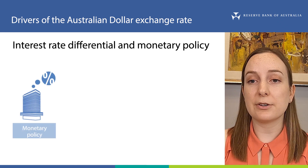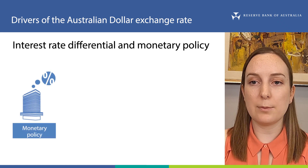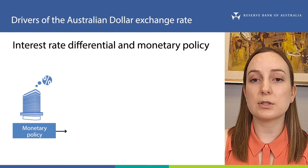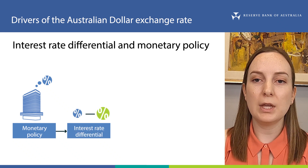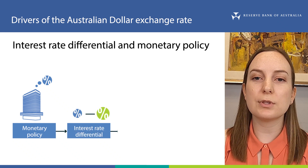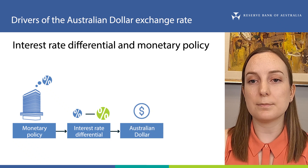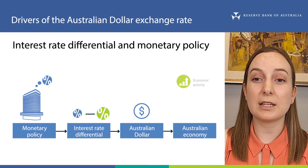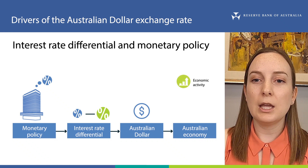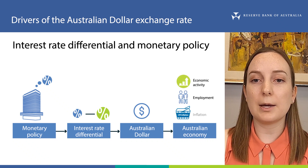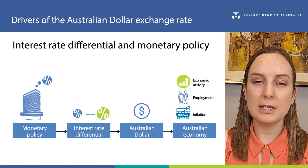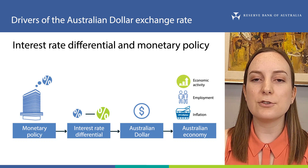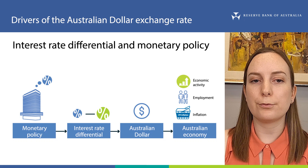When the RBA eases monetary policy — say, by reducing the target for the cash rate — all else equal, this reduces Australia's interest rate differential and contributes to the exchange rate being lower than otherwise. This is one channel for monetary policy to affect economic activity, employment and inflation to help the RBA meet its objectives. See our videos on exchange rates and the economy, and on monetary policy transmission for more information.